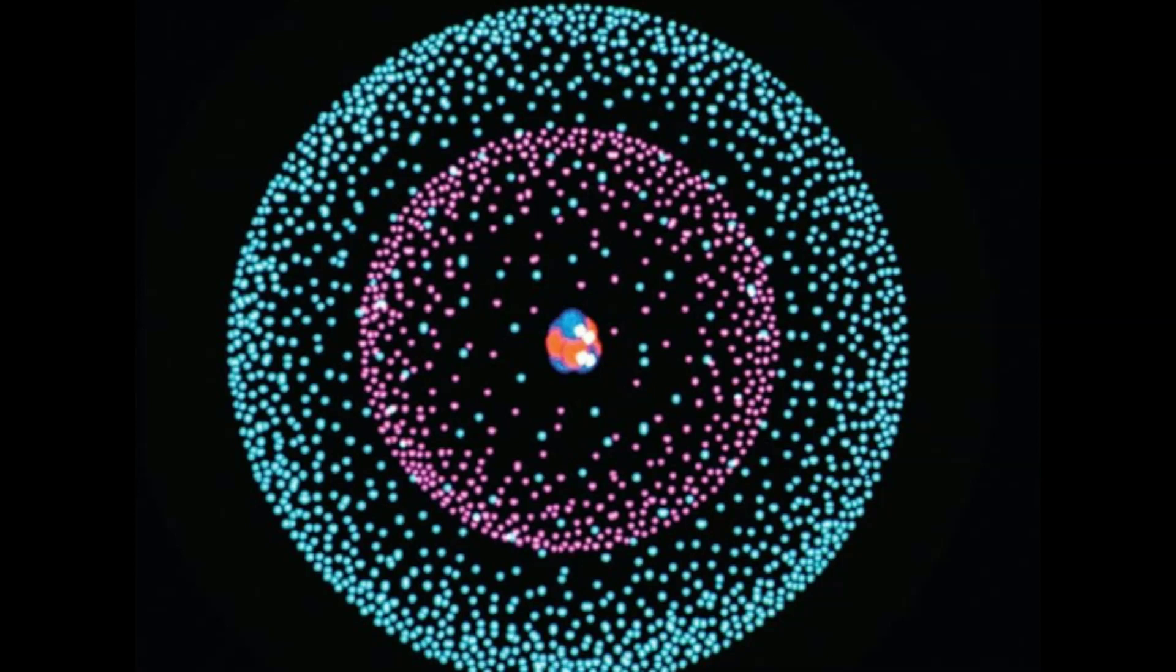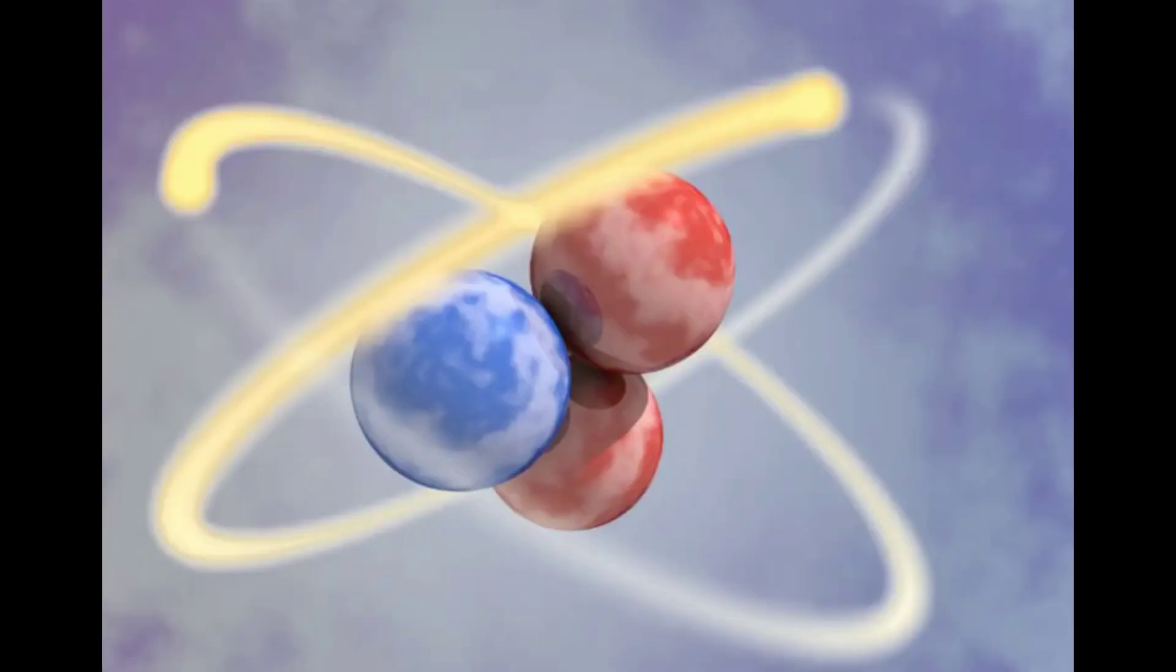A few hundred thousand years after the Big Bang, the universe had cooled enough for protons and neutrons to combine and form the first atomic nuclei, primarily hydrogen and helium. These simple elements are the most abundant in the universe today.